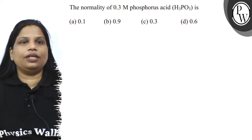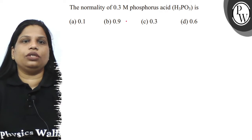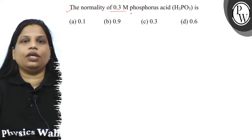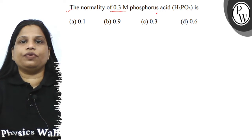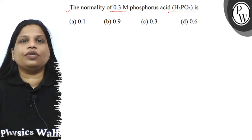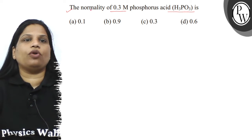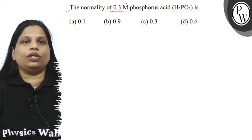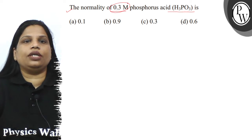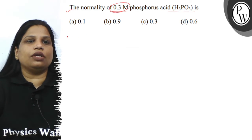Hello, let's read the question. The question says: the normality of 0.3M phosphorous acid is — phosphorous acid ki normality calculate karni hai and the molarity is given. So, let's do the question.